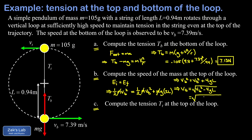Substituting in the numbers: 7.39 squared minus 4 times 9.8 times 0.94, and taking the square root. Running the numbers to three significant digits gives 4.21 meters per second for the speed at the top.